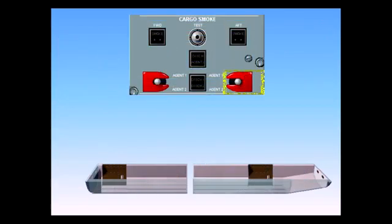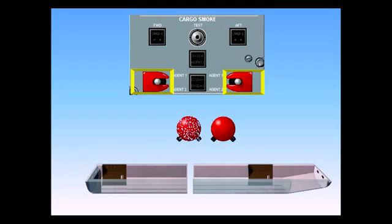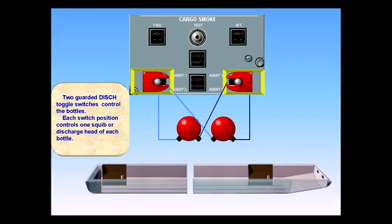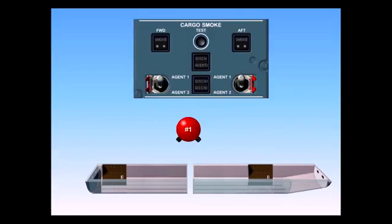Two guarded discharge toggle switches control the bottles. Each switch position controls one squib or discharge head of each bottle. When either the forward or aft switch is toggled upward to the agent one position, the respective squib is triggered and the halon enters the respective compartment.